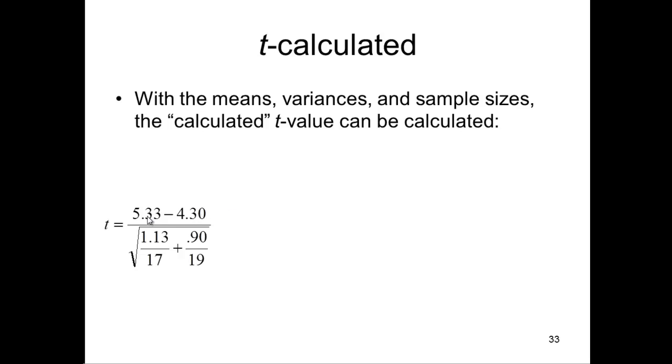So 5.33 minus 4.33, which is the two means for the two groups. And then I've got the variances here. 1.13 is the variance for group 1, and 0.90 is the variance for group 2. And then I'm dividing those by the sample size. And that's the independent sample t-test formula right here with the values inputted.